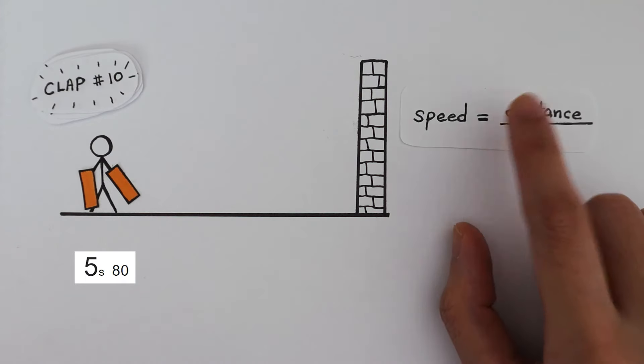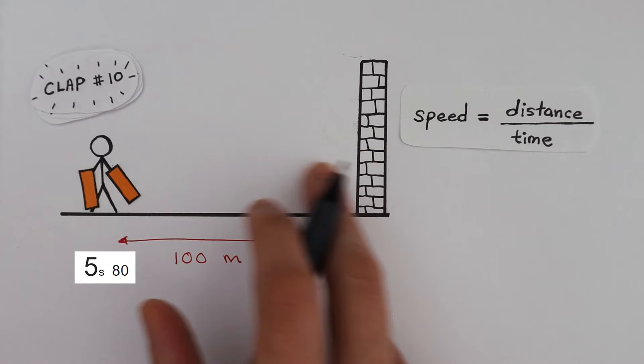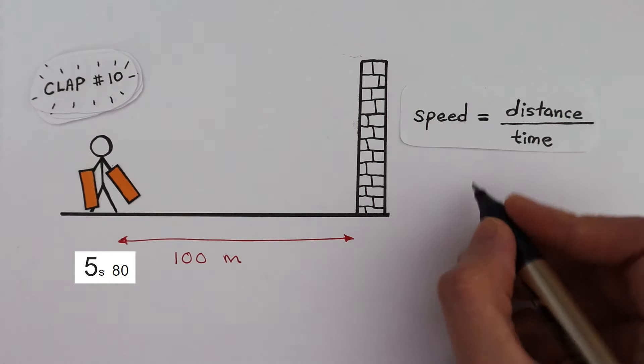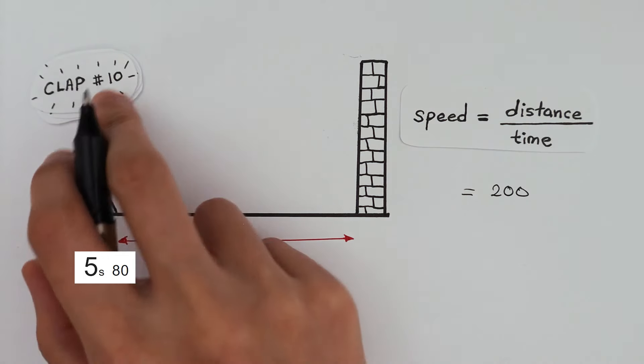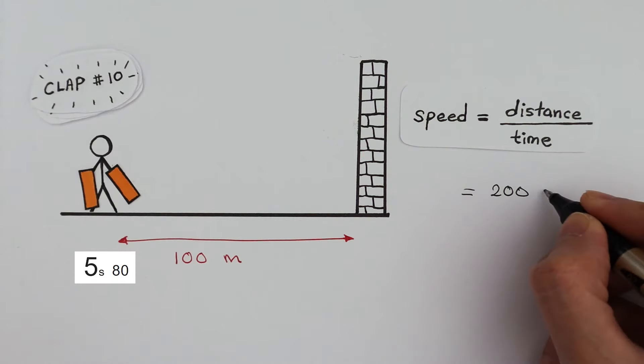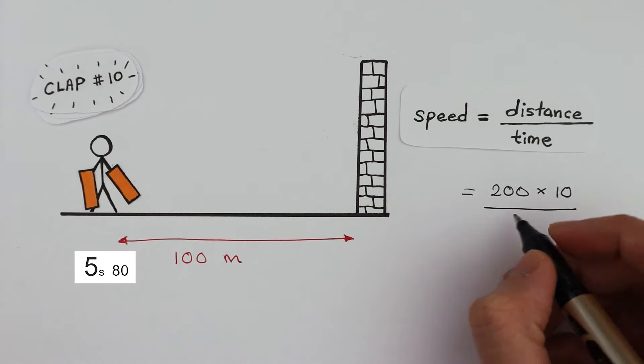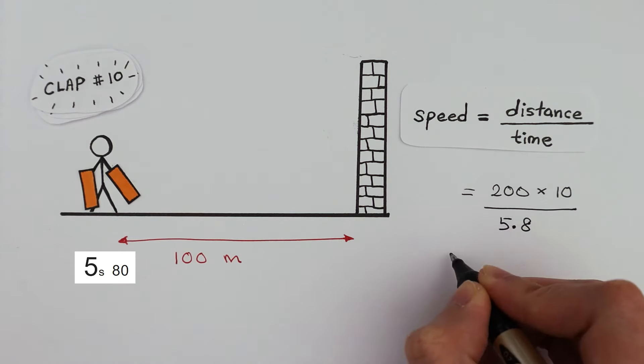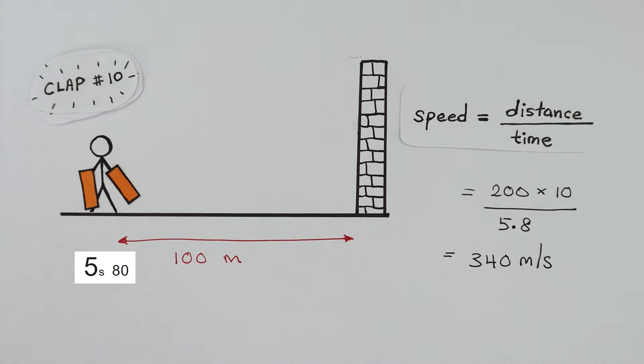Now back to the equation speed is distance over time. Traveling there and back is a distance of 200 meters. And this time, we've timed the journey of 10 separate sound waves. So we have to multiply by 10. Dividing by 5.8 seconds, we get 340 meters per second for the speed of sound.